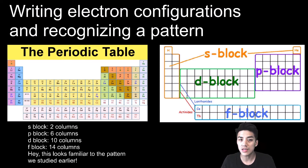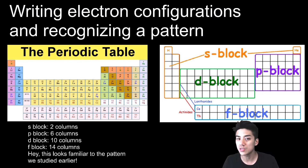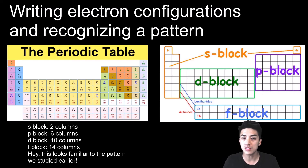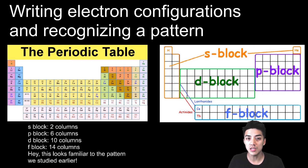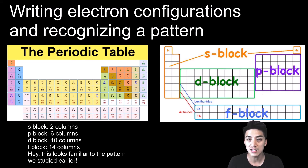Before getting into how to write electron configurations, recognize that there's a pattern on the periodic table. Each orbital can hold two electrons: s has one type, p has three types, d has five, f has seven — and you multiply each of those by two. The periodic table is also divided into four regions: an s-block, a p-block, a d-block, and an f-block. The number of columns corresponds to those patterns. So s has two columns and can hold two electrons, p has six columns and can hold six electrons, and d can hold ten electrons — that's why it has ten columns.